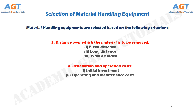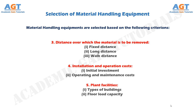Number 4: Installation and operation costs. This includes initial investment and operating and maintenance costs. Number 5: Plant facilities. This includes types of buildings and floor load capacity.